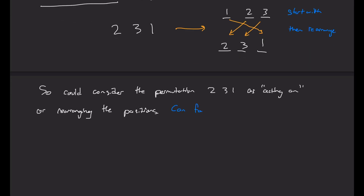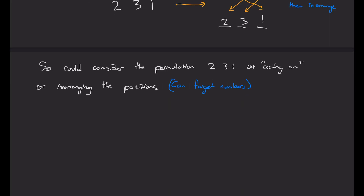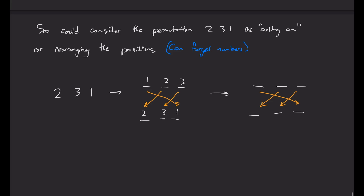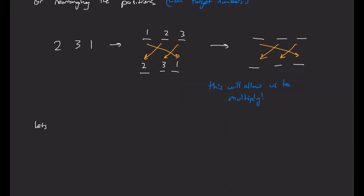In this way, we can actually forget the numbers. So for example, we have our (2, 3, 1) from above, but if I just erase the numbers, I'm still left with these arrows, and I can consider this action that I have left. The beauty of thinking about them this way is that I can just compose these arrows, and that will tell me how to multiply them. So let's take another permutation, write down its arrows, and see if we can multiply these two together.